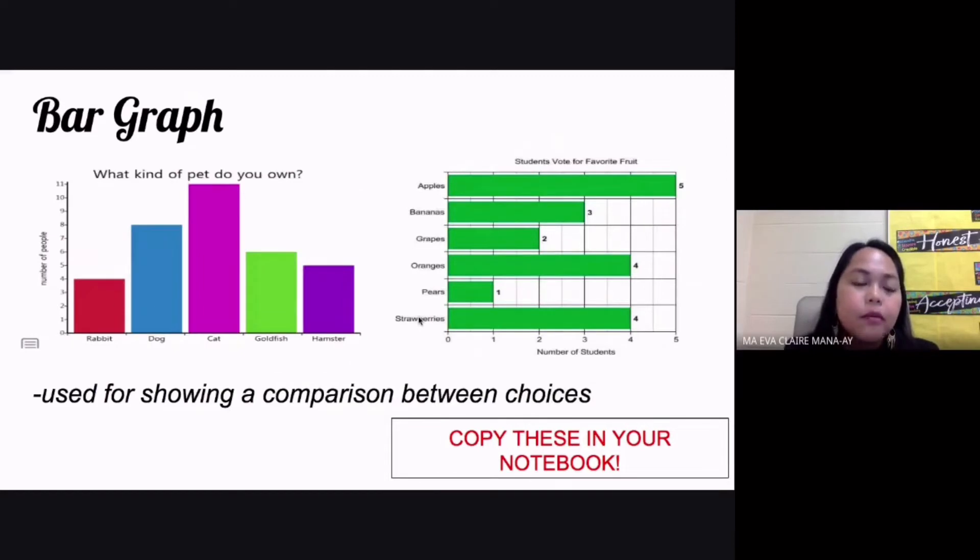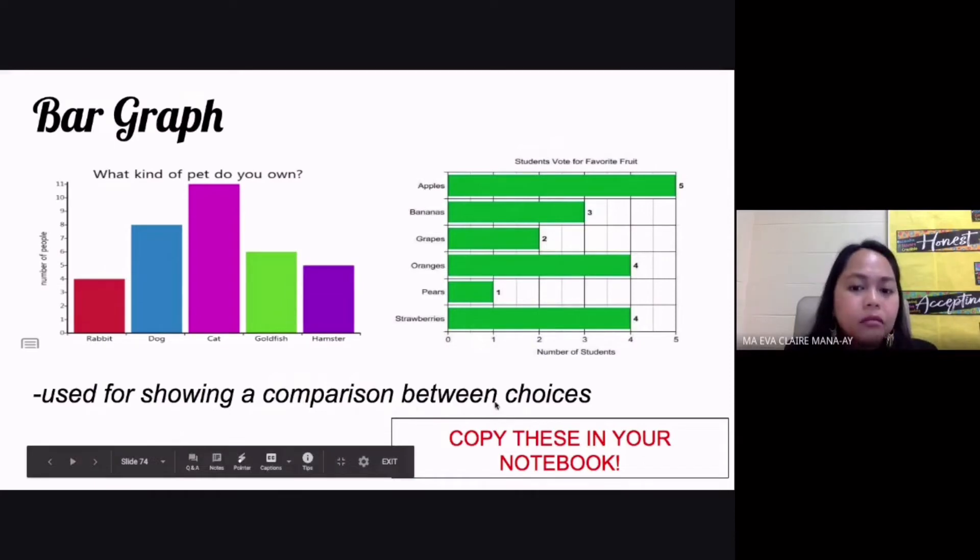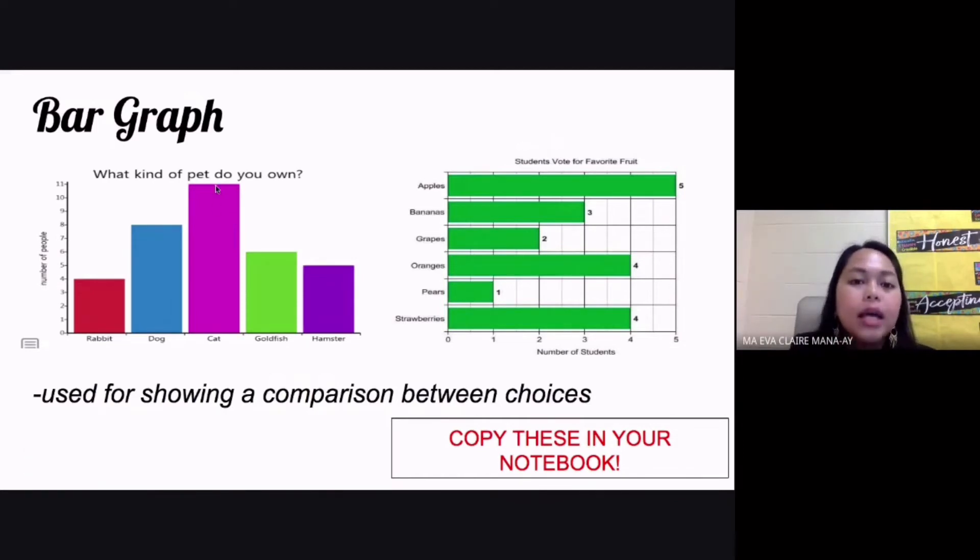The second type of graph is your bar graph. Your bar graph functions to compare your different choices. It's used for showing a comparison between choices. For example, what kind of pet do you own? You have different choices: rabbit, dog, cat, goldfish, and hamster.